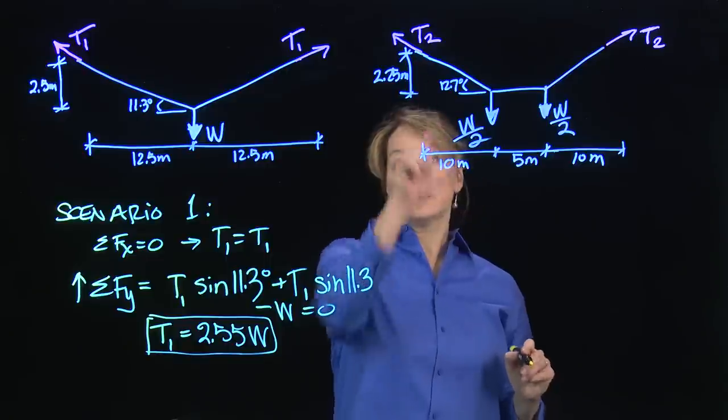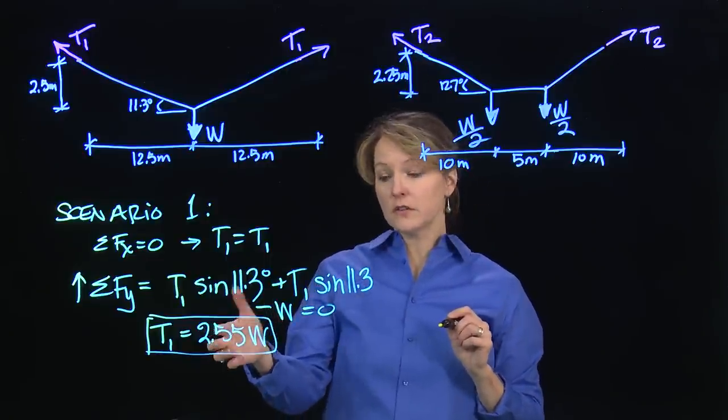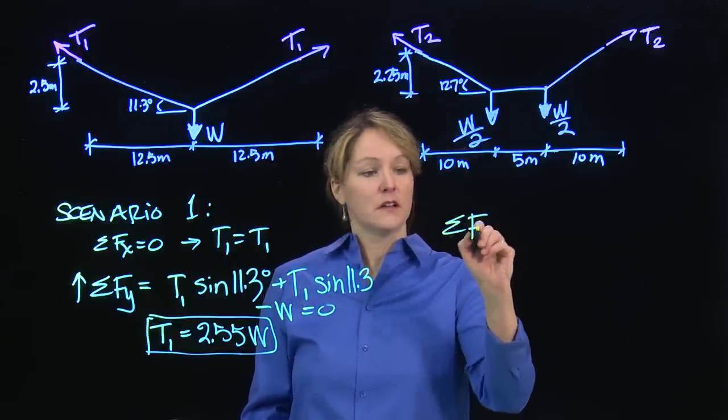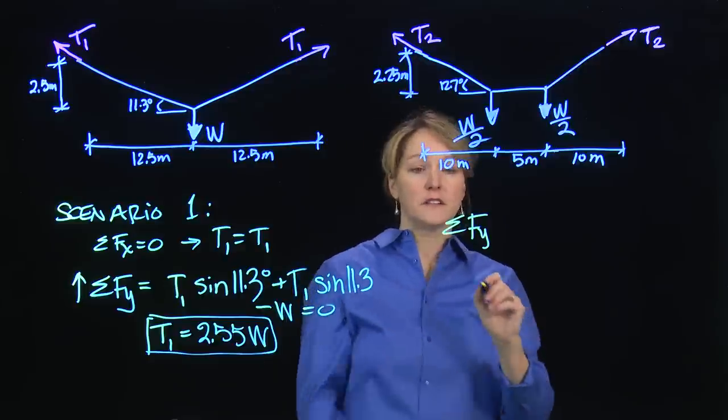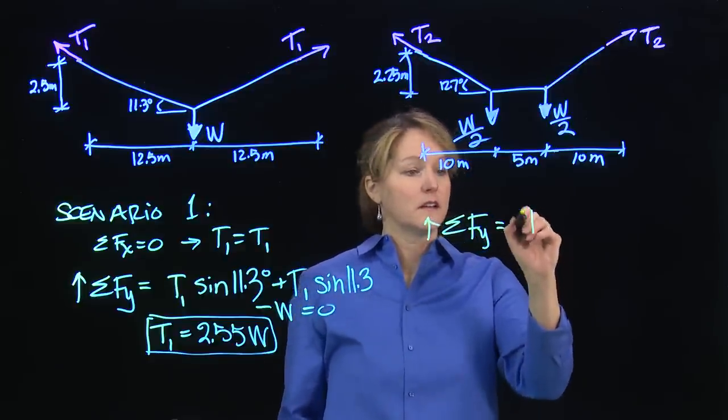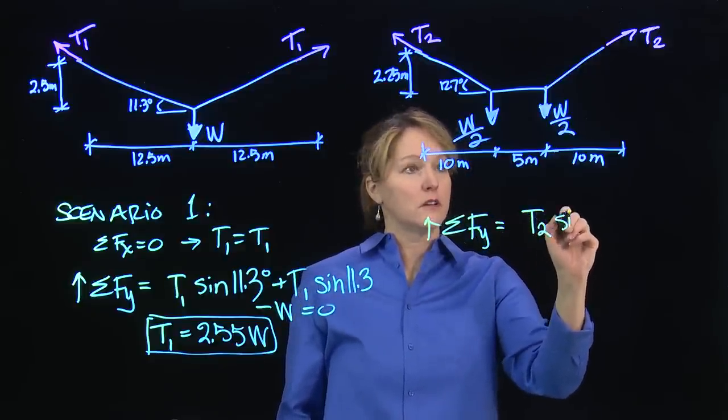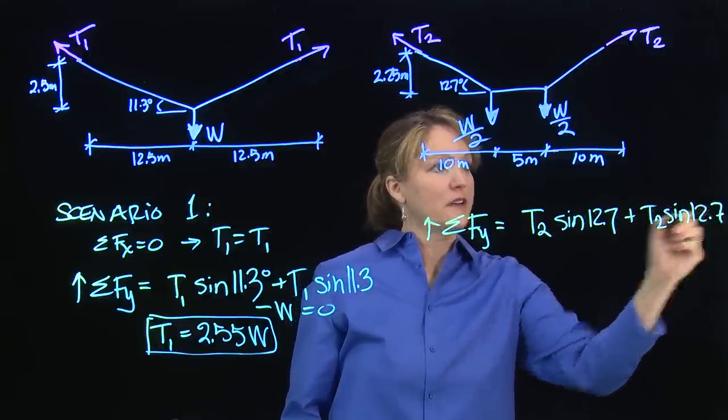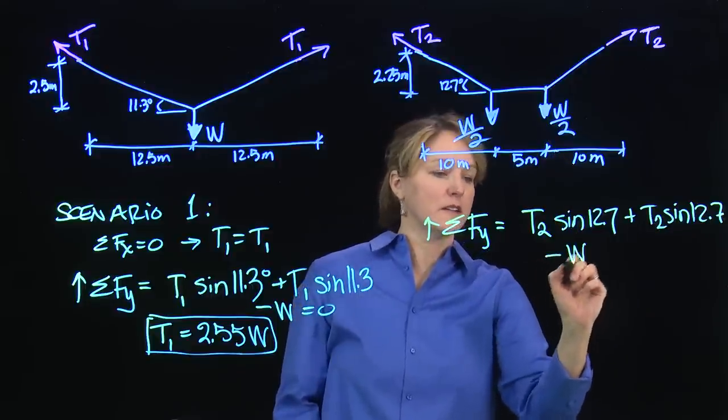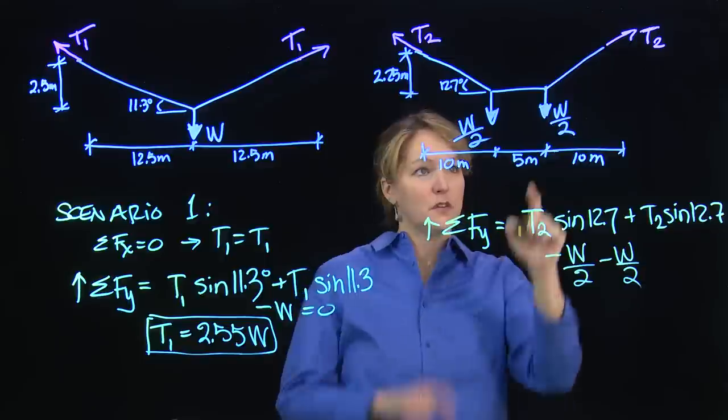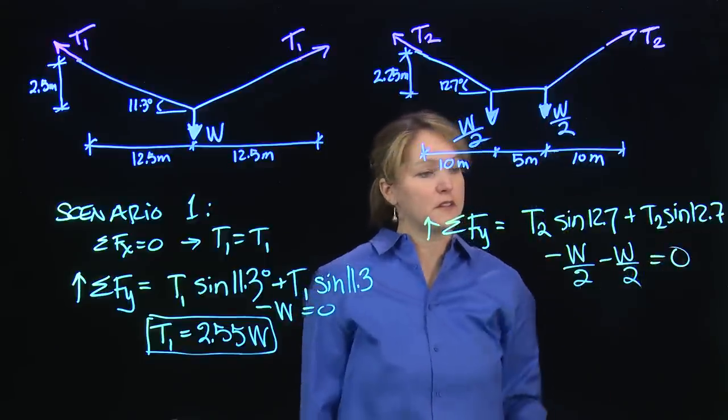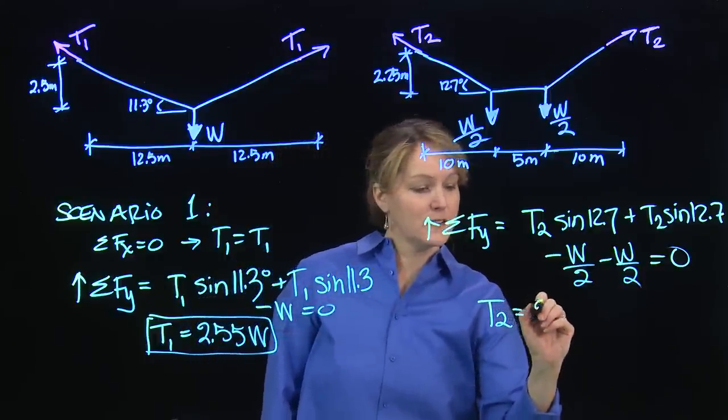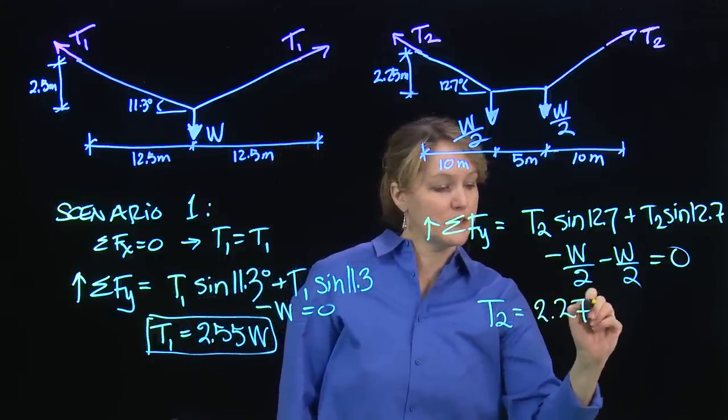But what I want to do is now calculate this T2 and see if it's equal to, greater than, or less than this value. Summing forces in the y direction, I get T2 sine 12.7 plus T2 sine 12.7. Now I'm subtracting, still the total load, W over 2 in the two scenarios equals zero, and I can solve for T2. T2 in this case is only 2.27 W. That's actually a decent difference, over 10% difference between the tension force just by distributing it to two forces as opposed to one.